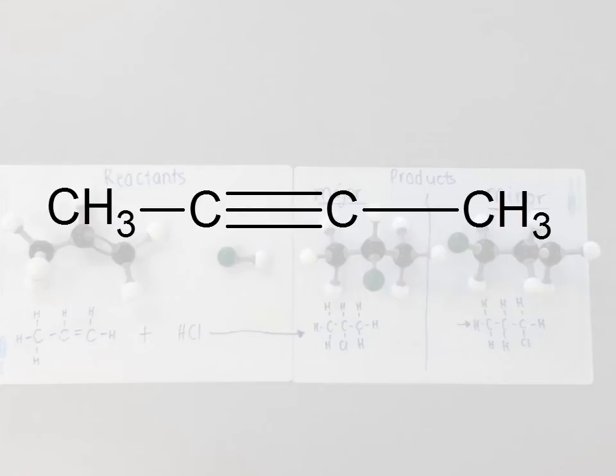Right, so this one here is obviously an alkyne because it's got the triple bond. It's coming off the second carbon and there's four carbons in the main chain. So this is but-2-yne.